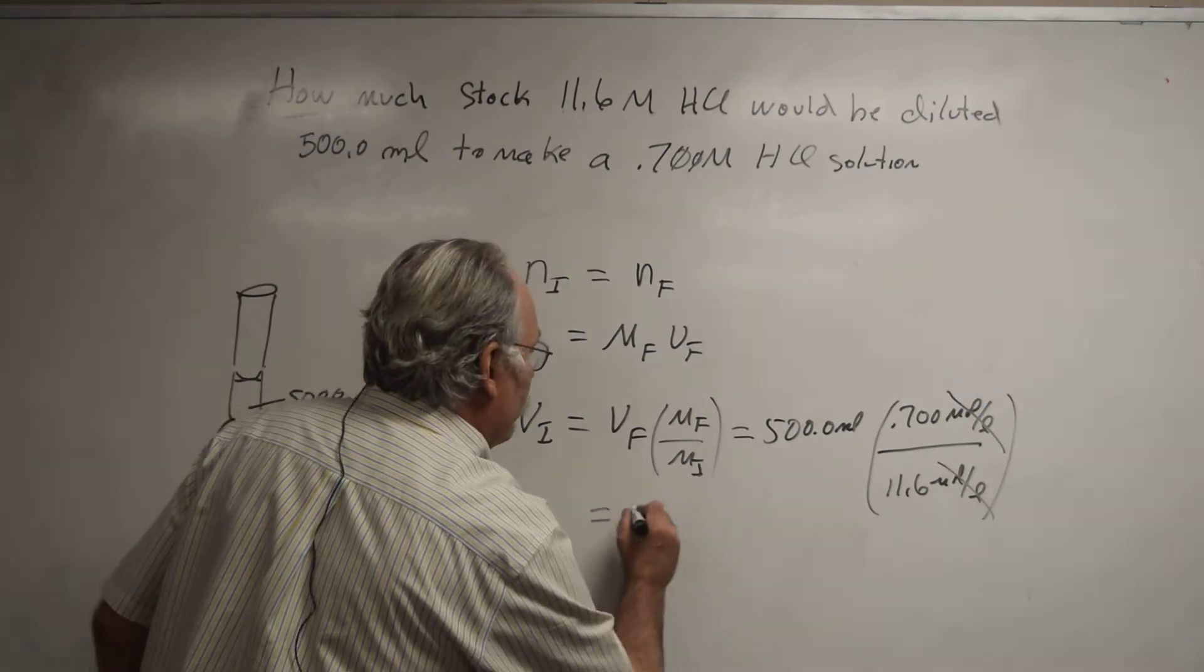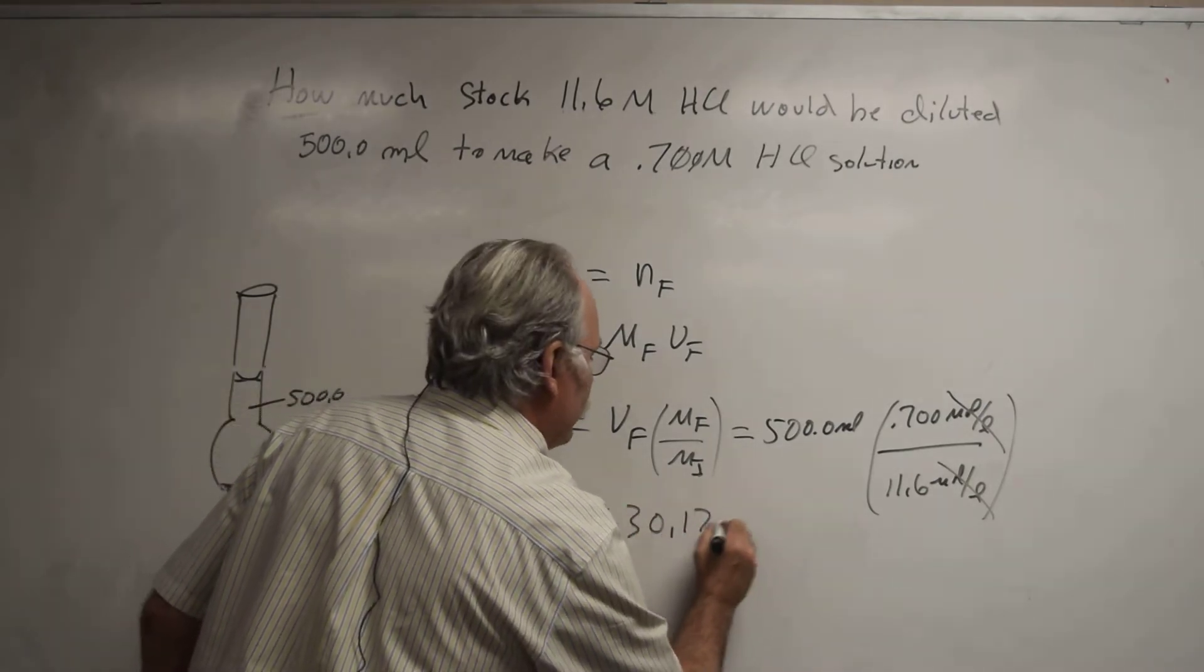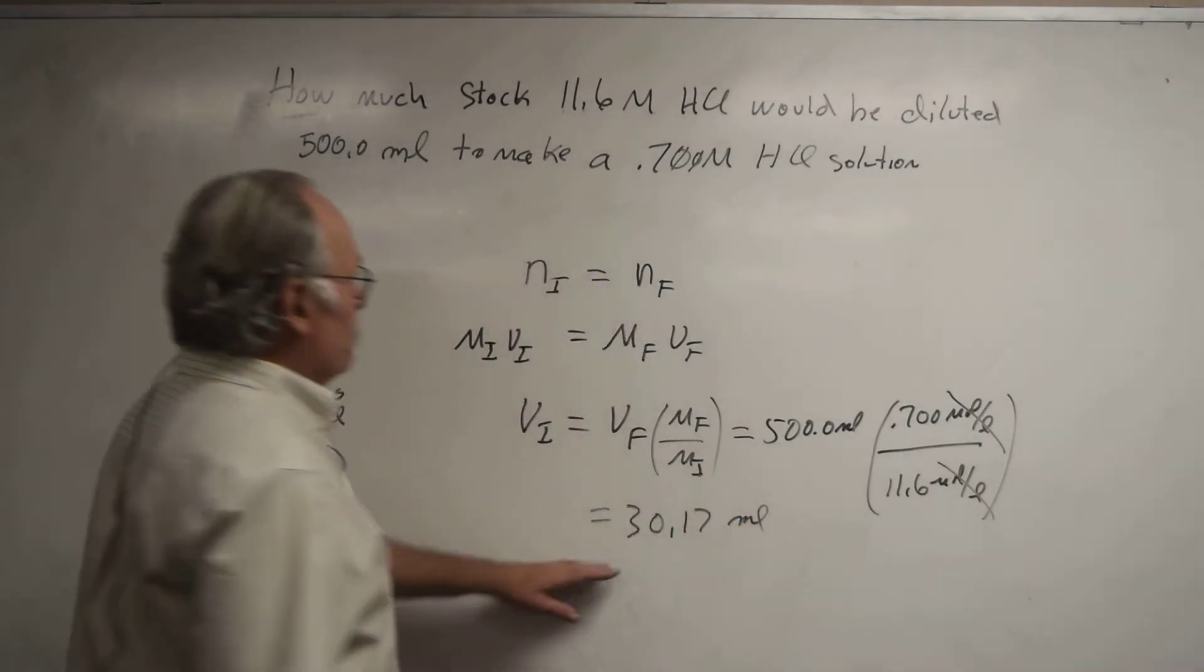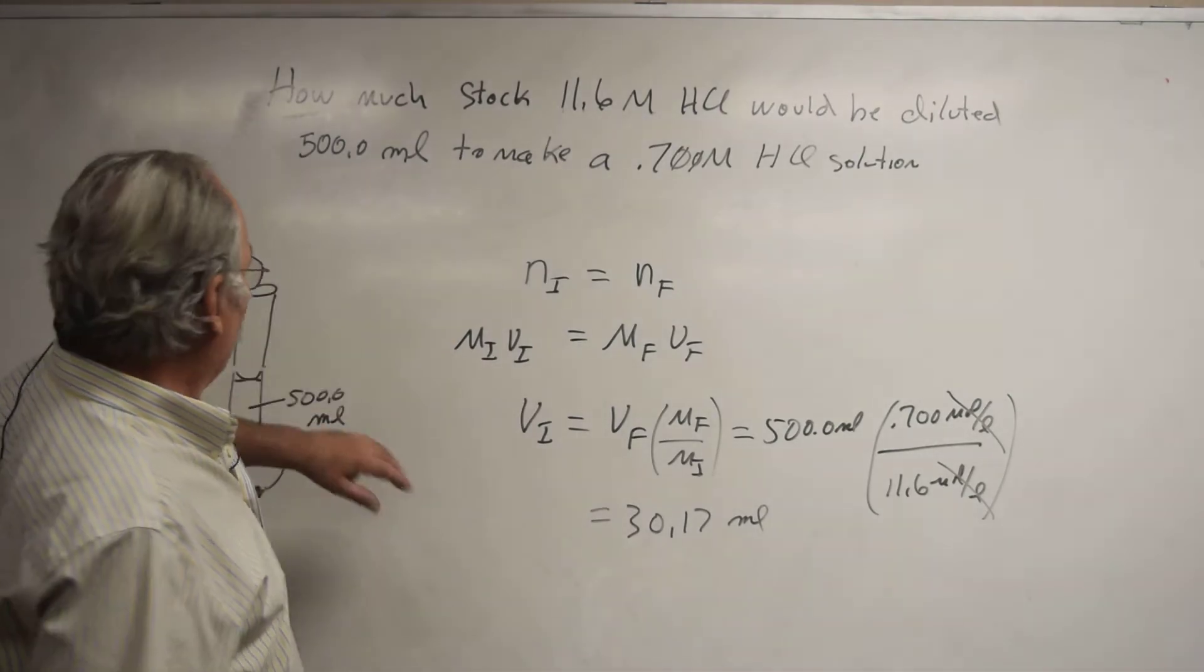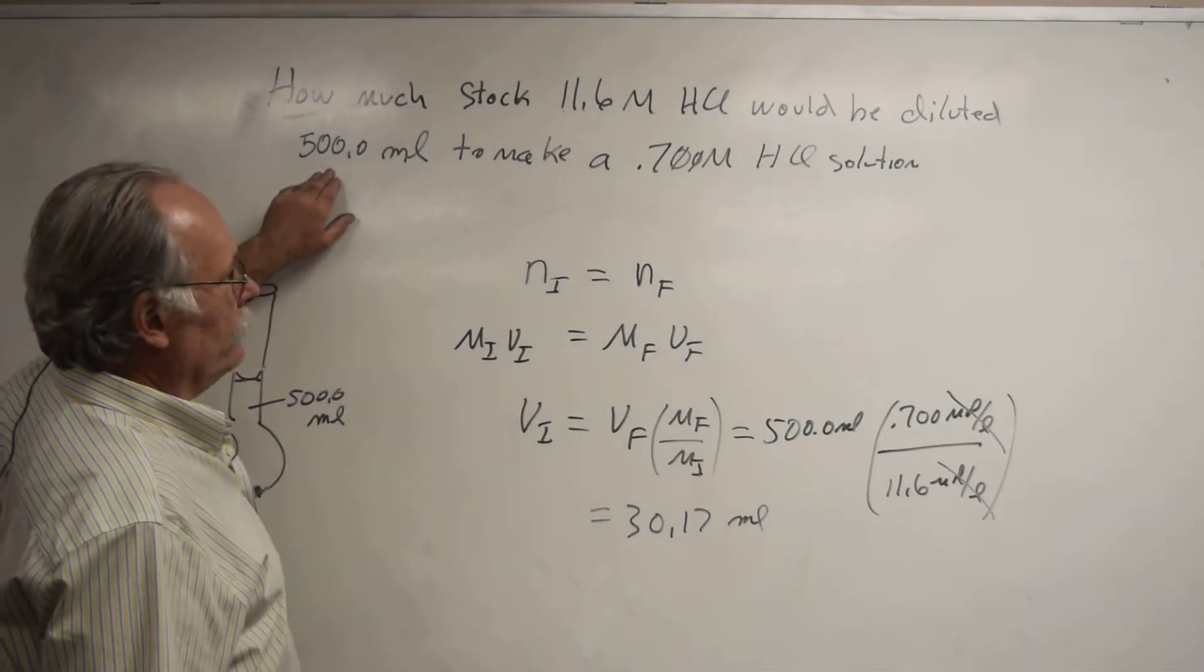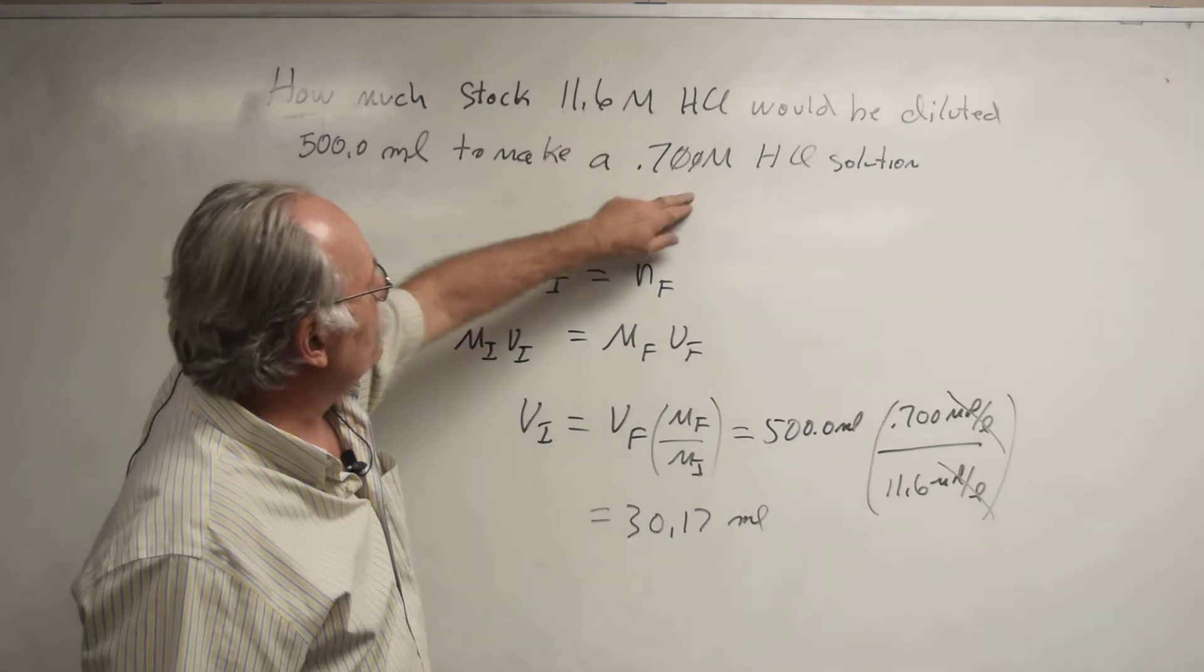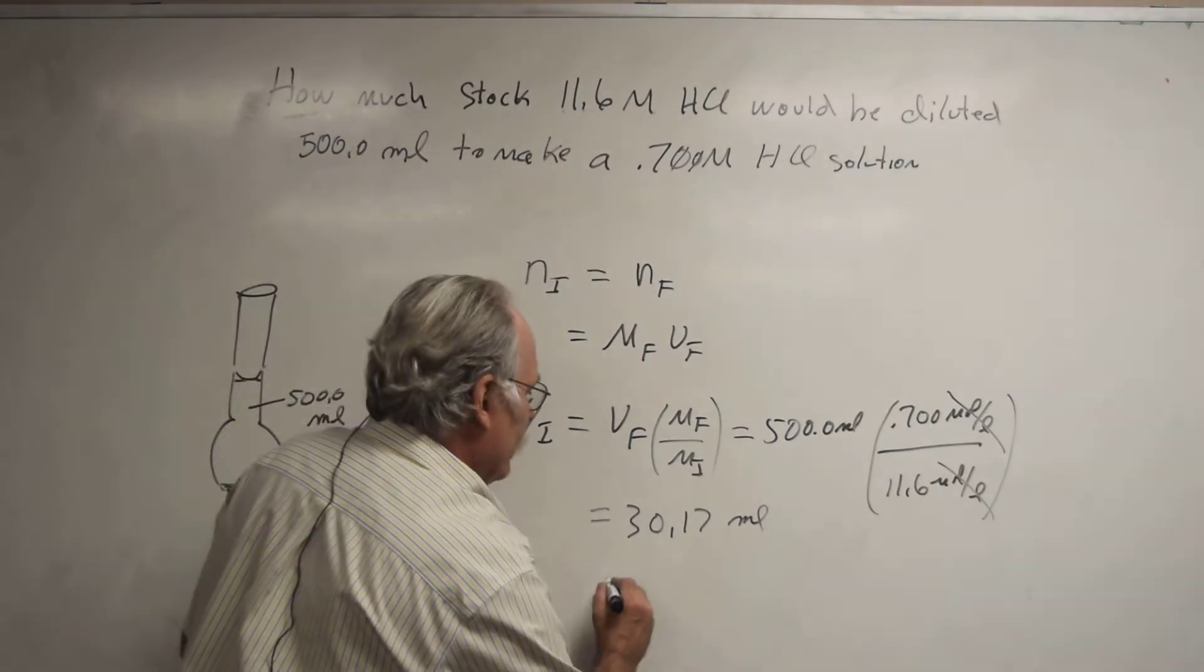And this comes up with 30.17 milliliters. And it gets marked wrong, because although the volumetric flask had four sig figs, the concentrations only had three sig figs, so it's 30.2 milliliters.